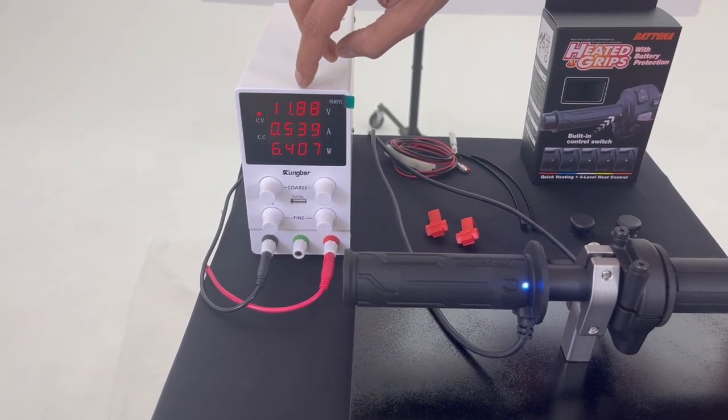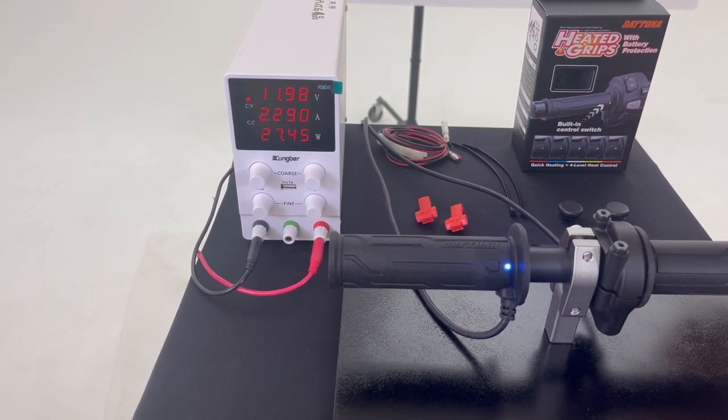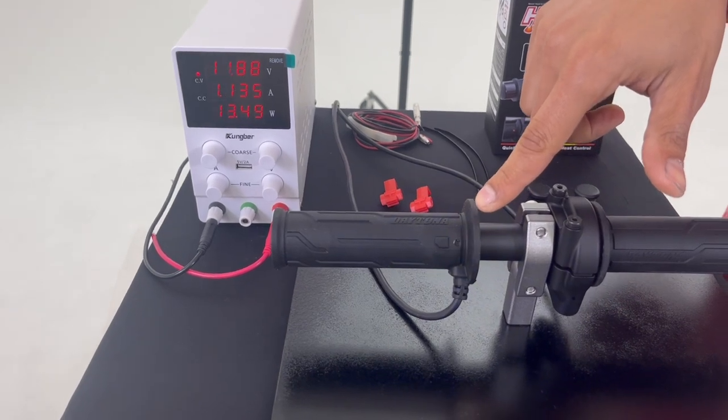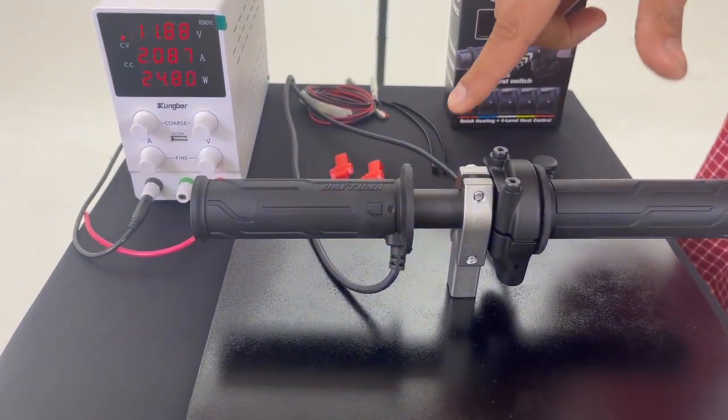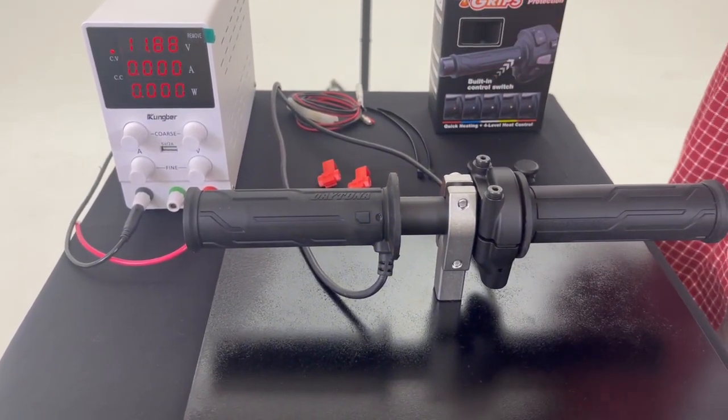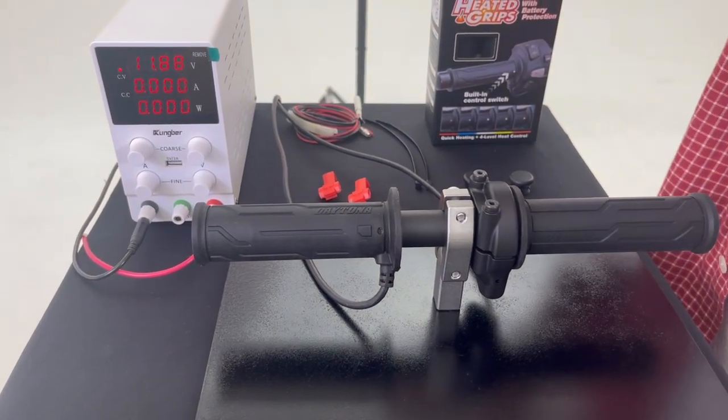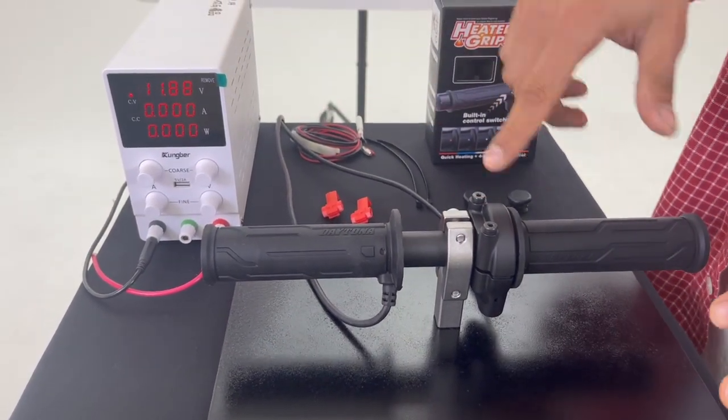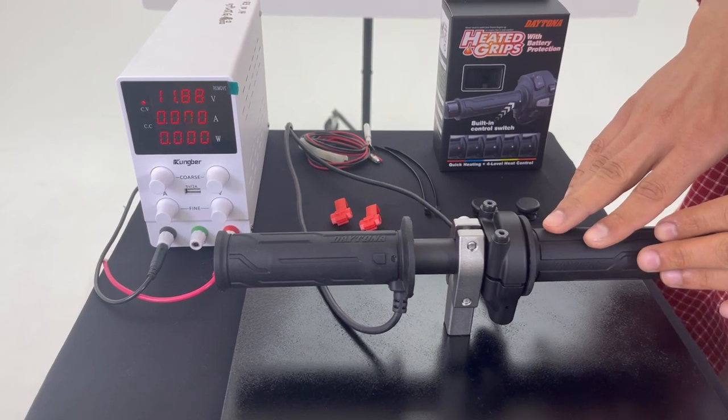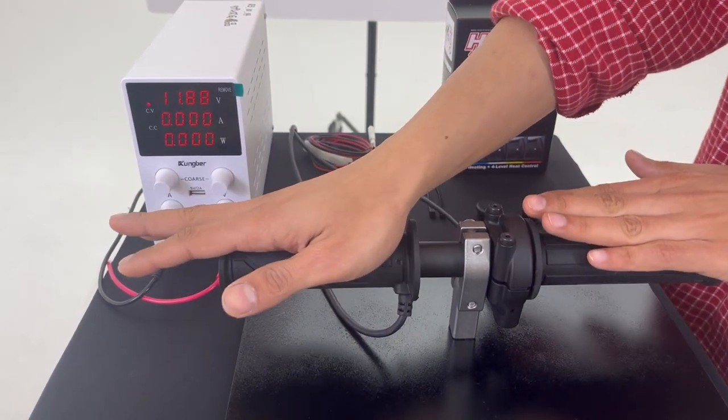Now as you can see, the battery is lower than 12 volts. The grip is blinking right now, which means it will turn itself off. As you can see, it stopped working. No power consumption from the battery right now.